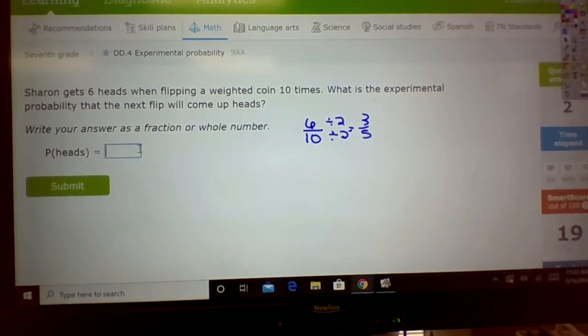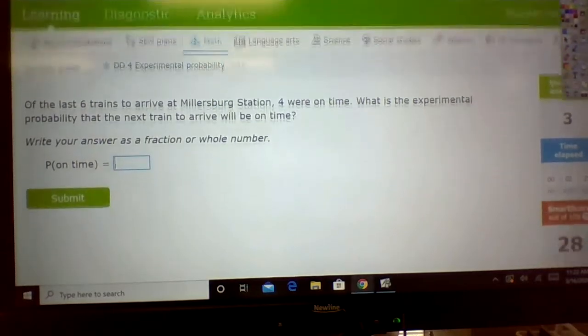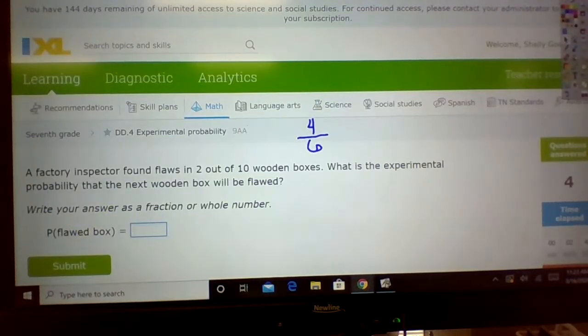That's different than a normal coin, guys. A normal coin is always going to be 50 percent, but it's not 50 percent. All right? Of the last six trains to arrive, see now they're trying to trick you. They're putting the bottom number first. Six trains, four of them are on time. The probability? Four out of six.